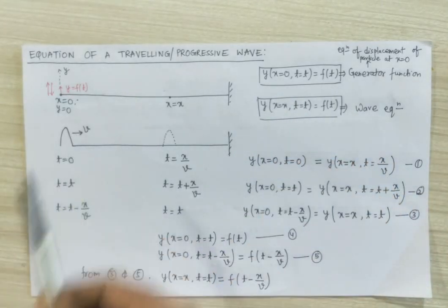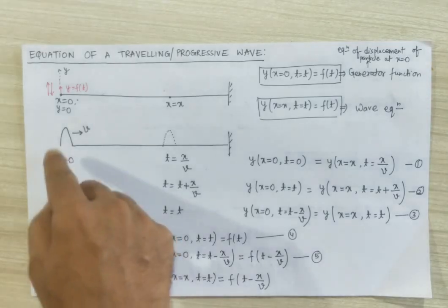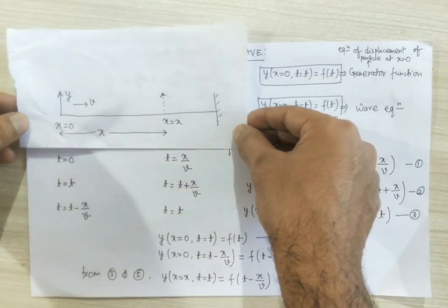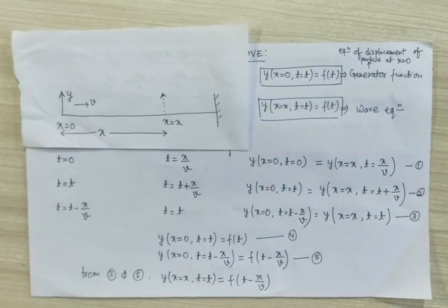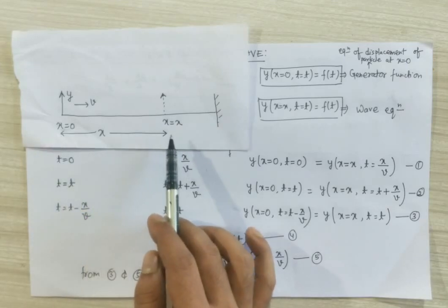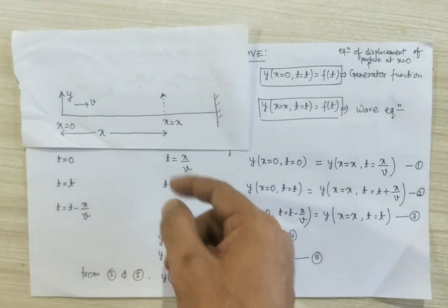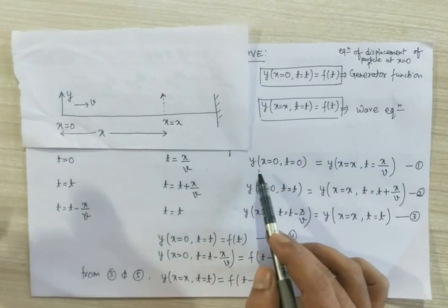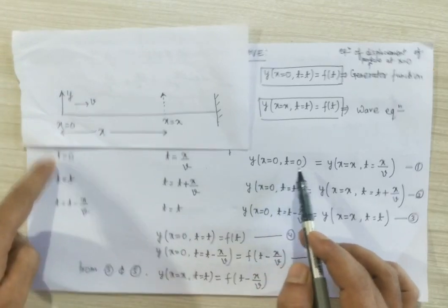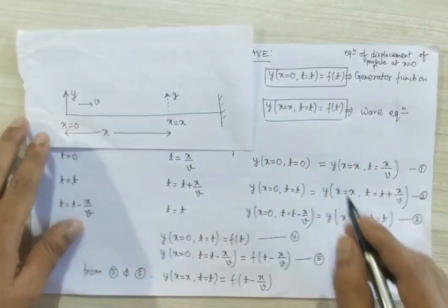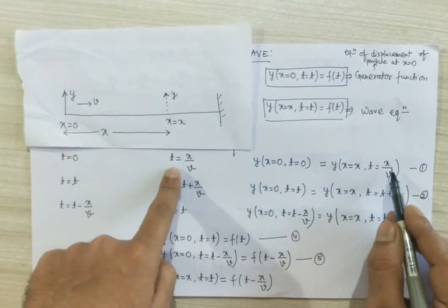For simplicity, I am taking this pulse as y. The displacement y produced at the left end of the string at time t equal to 0 will reach the point x equal to x after a time t equal to x divided by v, that is distance divided by speed. In equation form: y at x equal to 0 and t equal to 0 will be equal to y at x equal to x and t equal to x by v.